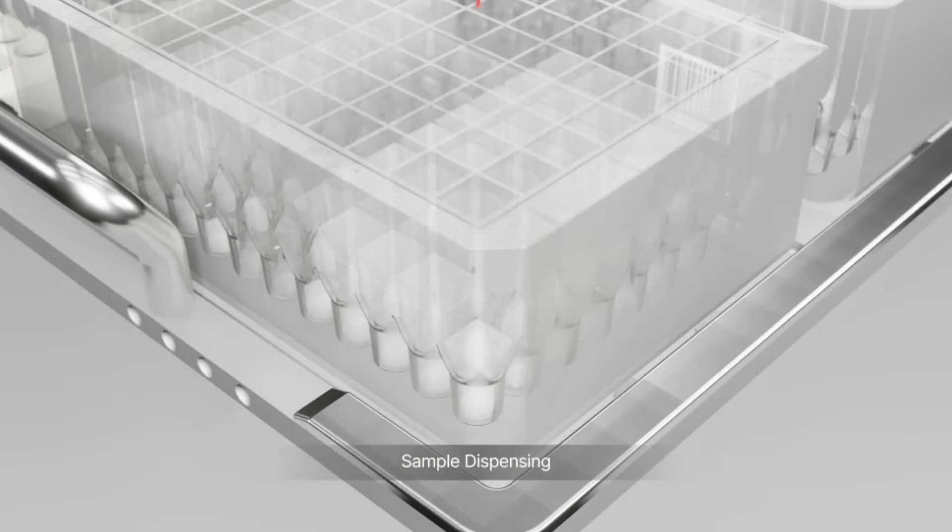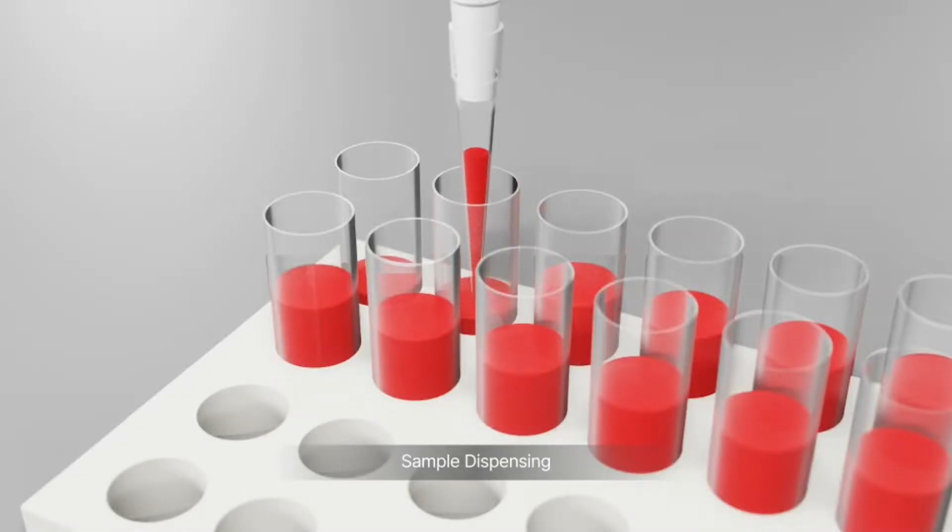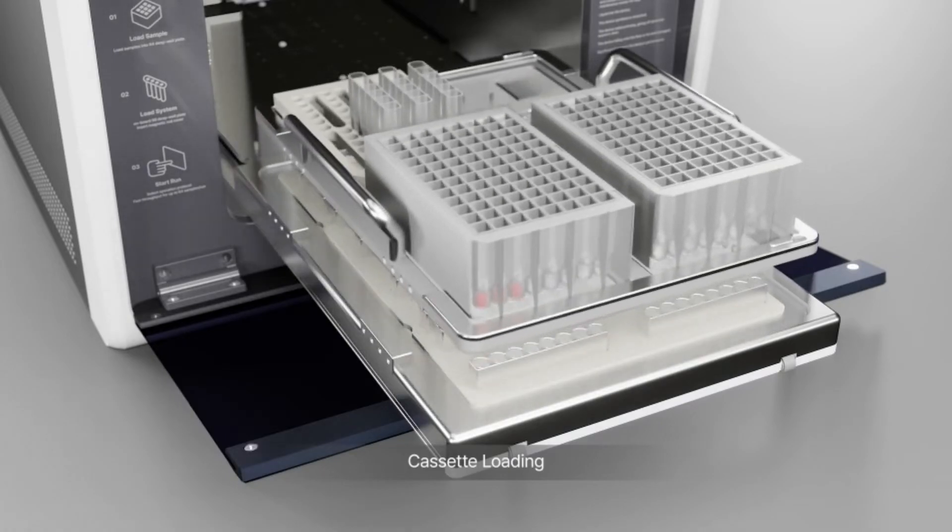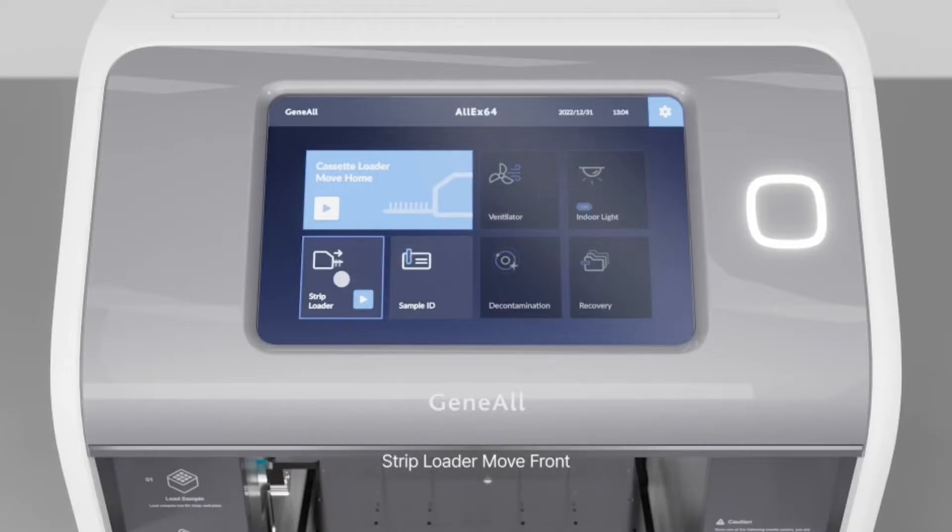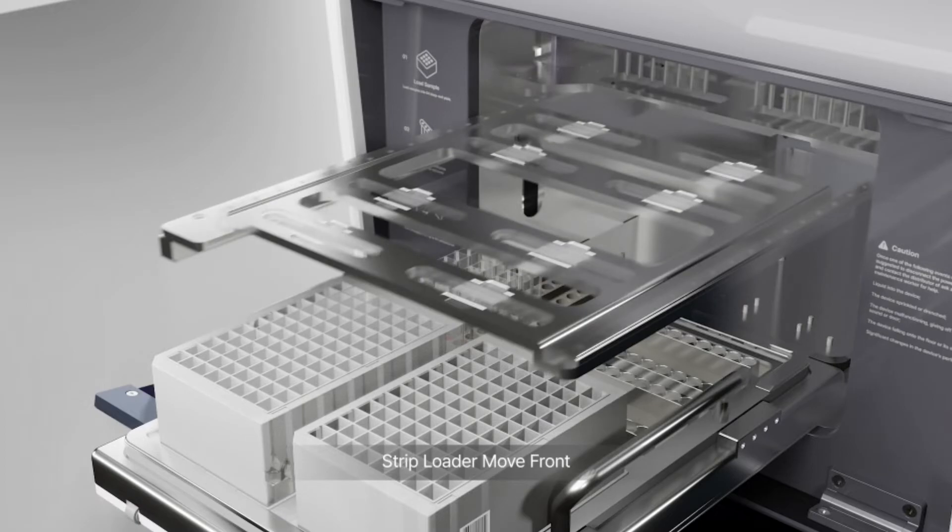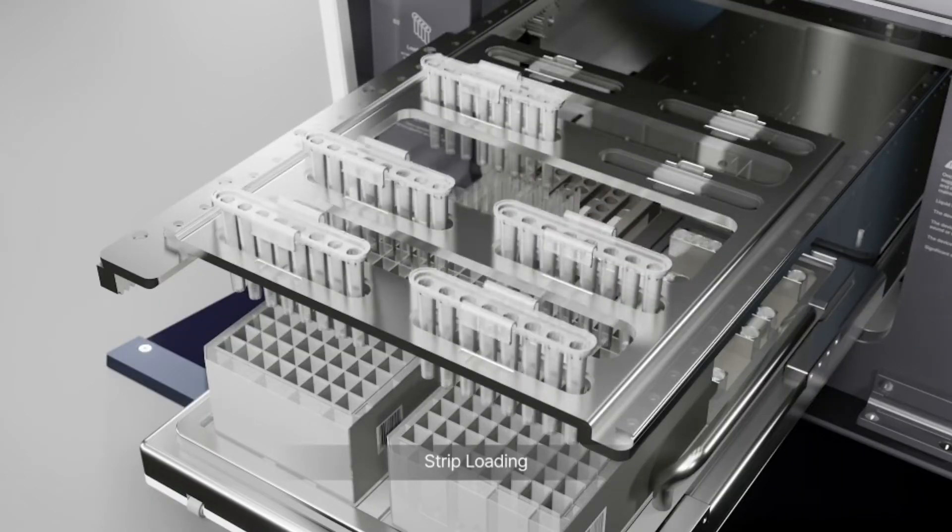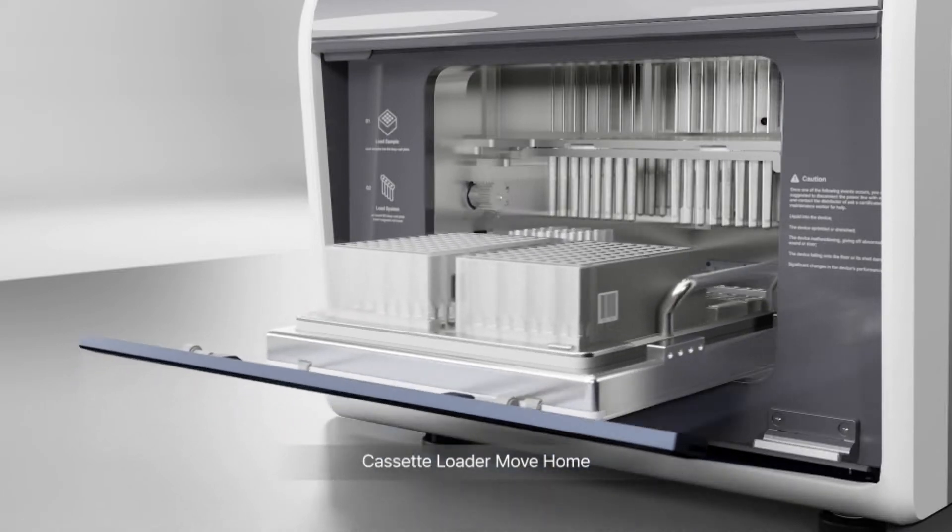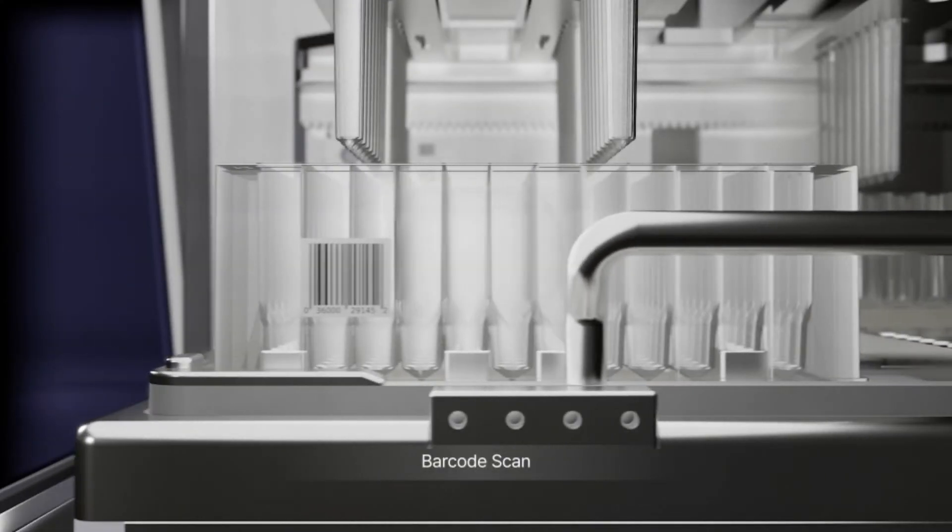After adding the sample to the cartridge, users can simply load the cassette loader to the instrument. The automatic strip loader moves to the front, facilitating loading strips and eliminating the potential of missed strips.